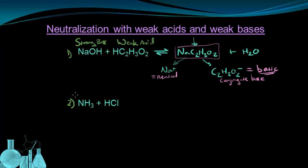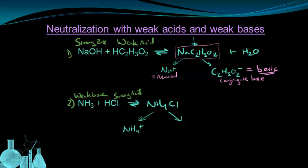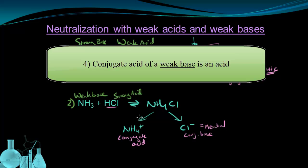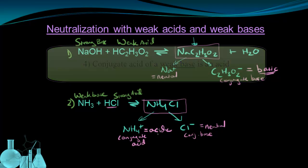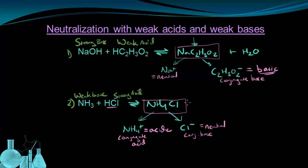The next example is the opposite: a weak base, ammonia, reacting with hydrochloric acid, a strong acid. When these react, we get the salt ammonium chloride, made of the ammonium ion NH₄⁺ and the Cl⁻ ion. We recognize Cl⁻ as the conjugate base of a strong acid, so it's essentially neutral. Now we consider NH₄⁺, which came from a weak base, making it a conjugate acid. The fourth rule of thumb: the conjugate acid of a weak base is an acid. An acidic ion combined with a neutral ion means ammonium chloride in solution will have a pH less than 7 — it results in an acidic solution.